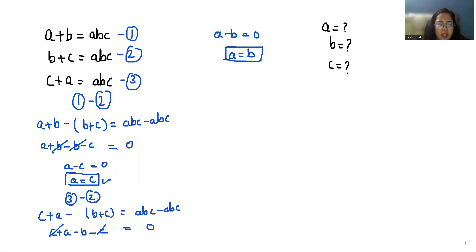So as we check, a equals c and a equals b also. So a equals b and also equals c. So a, b, c all are equal to each other. So now come to equation number first.